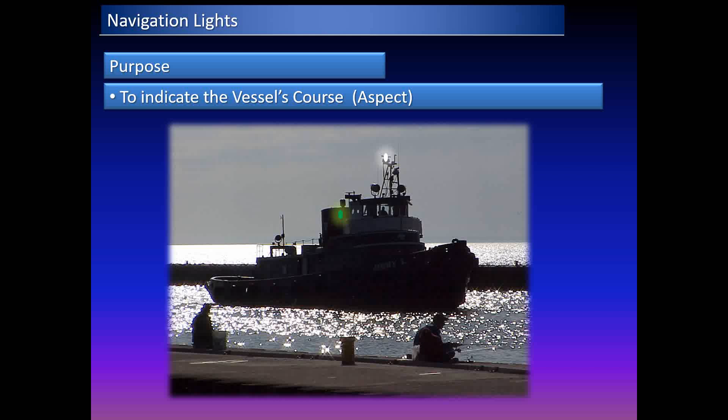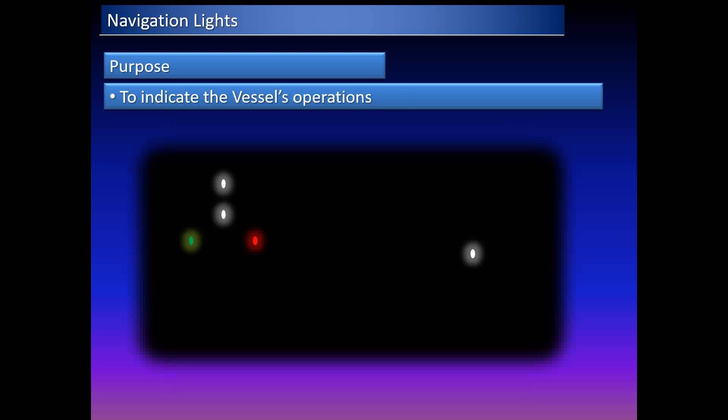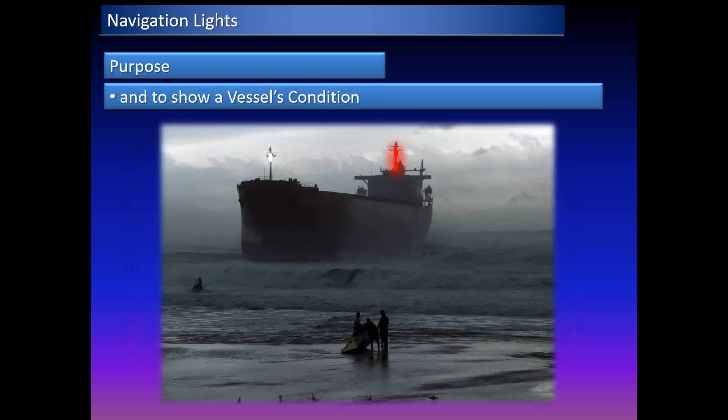For example, if we see this tugboat here, we know that we are watching its starboard side. Navigation lights also indicate the vessel's operations — for example, this appears to be a towing vessel. They also show a vessel's condition; in this case, the two red lights indicate that the vessel is not under command.